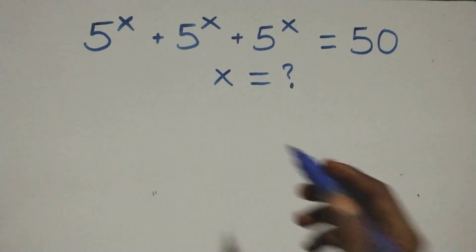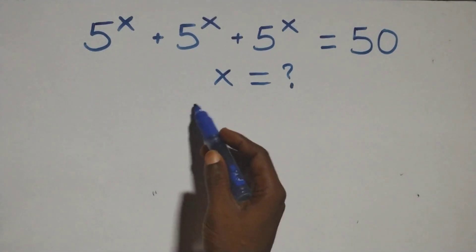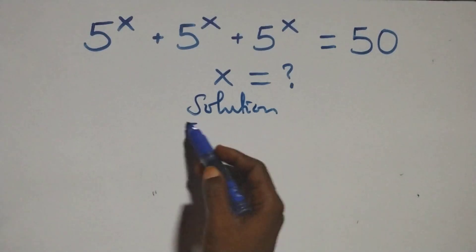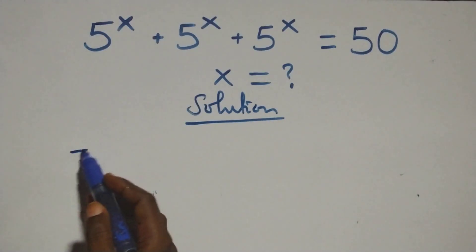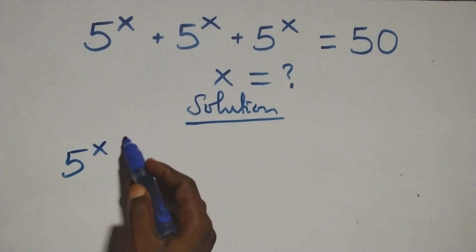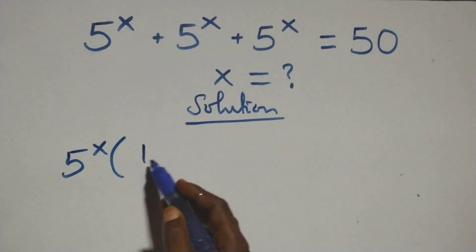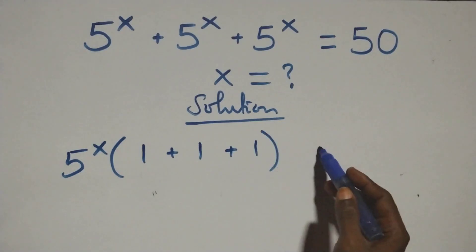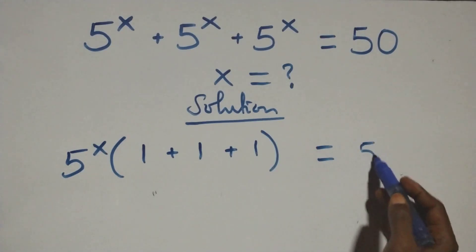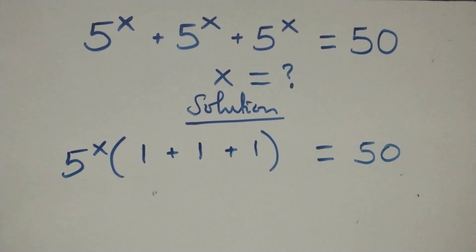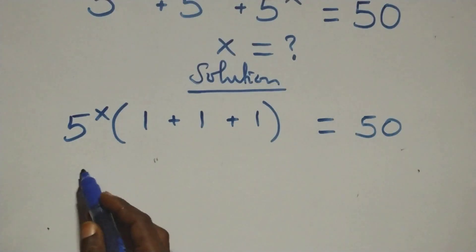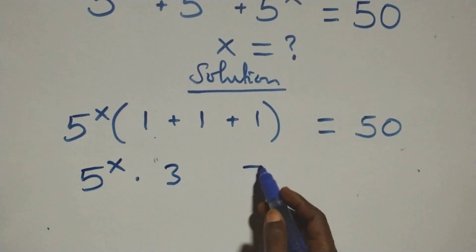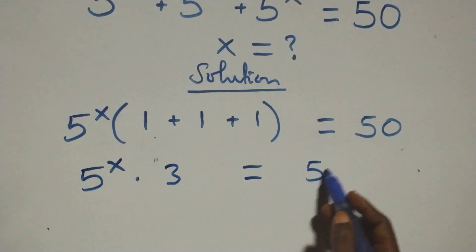Hello y'all, welcome. How to solve this nice exponential equation. What we have here is to factor 5 raised to power x out. We have 5 raised to power x into bracket, and here we have 1 plus 1 plus 1 left, which equals 50. So this becomes 5 raised to power x times 3 equals 50.